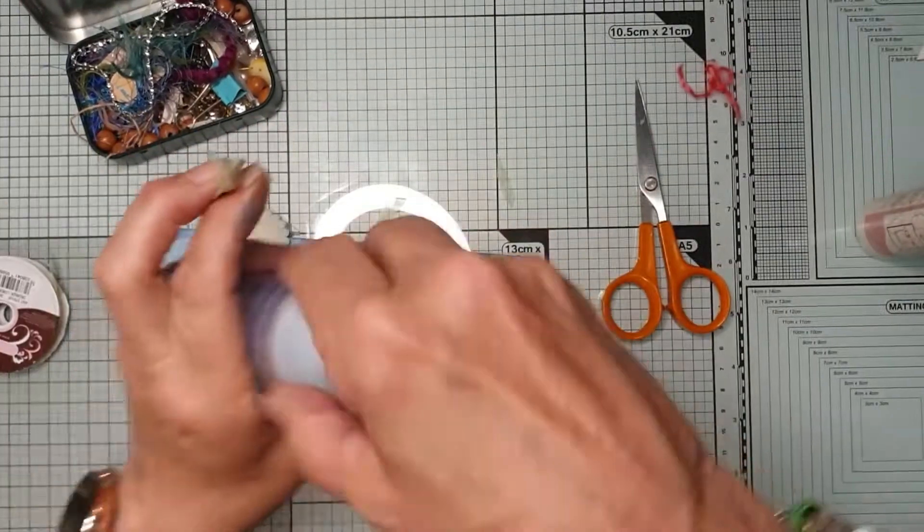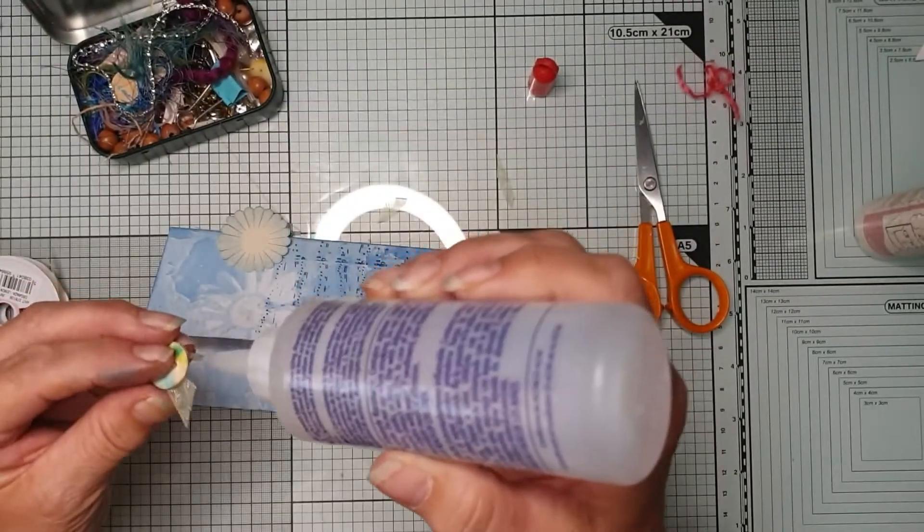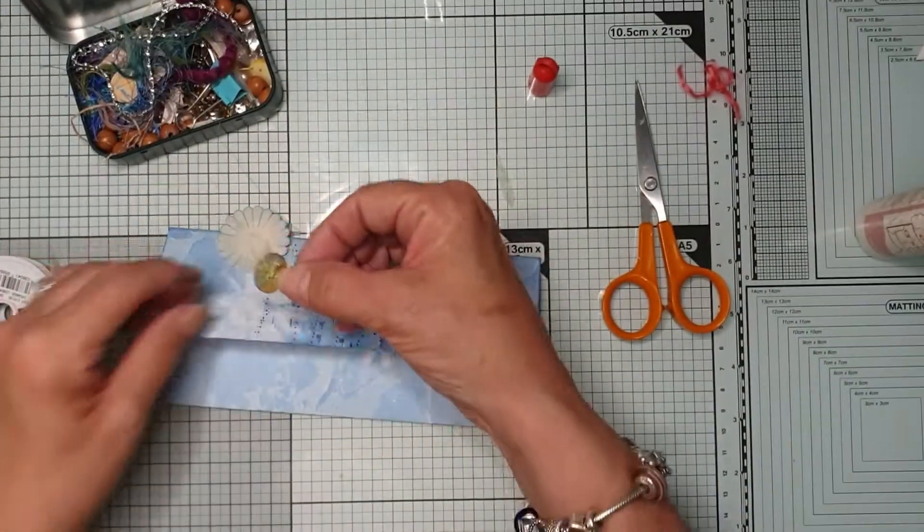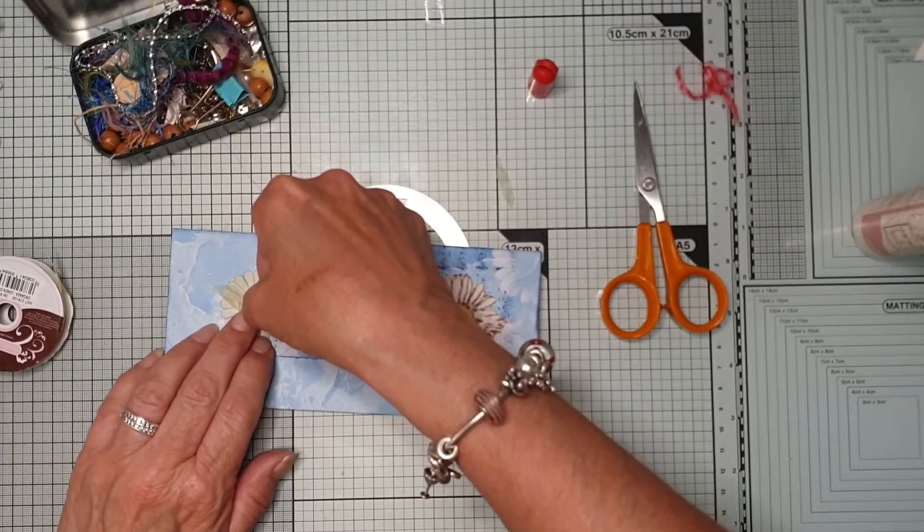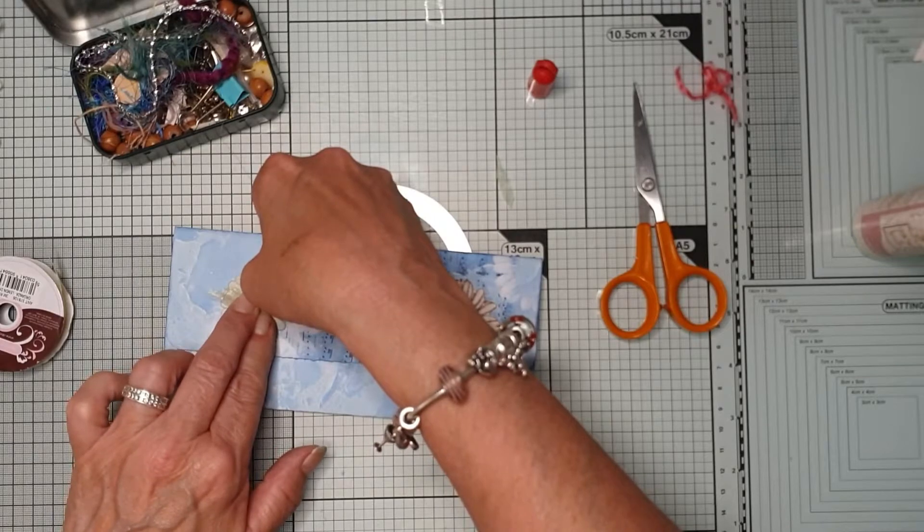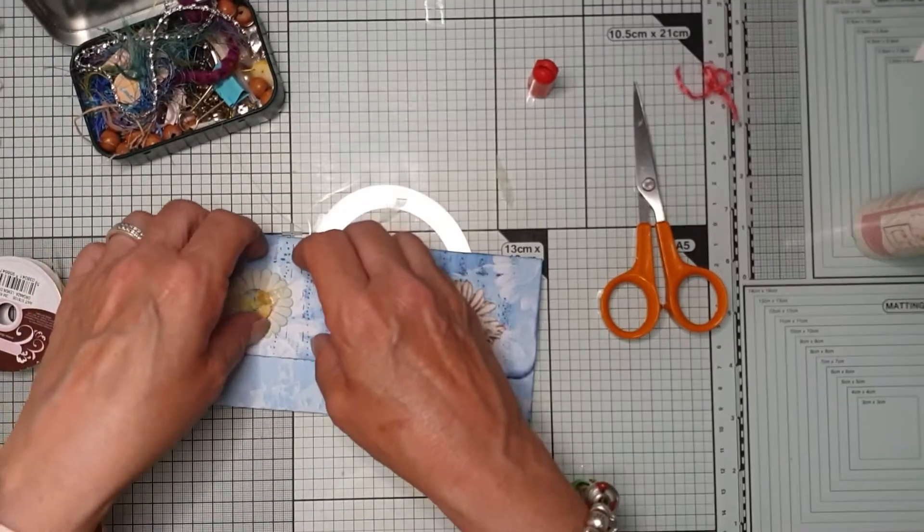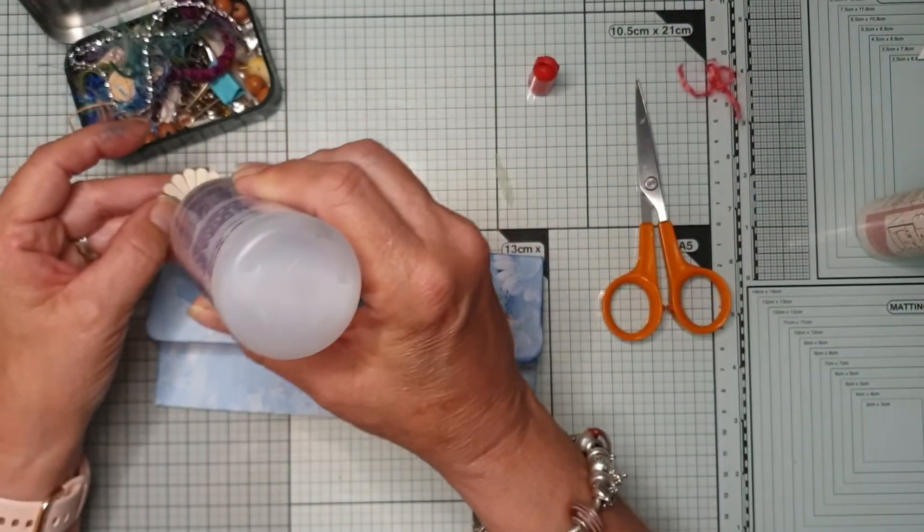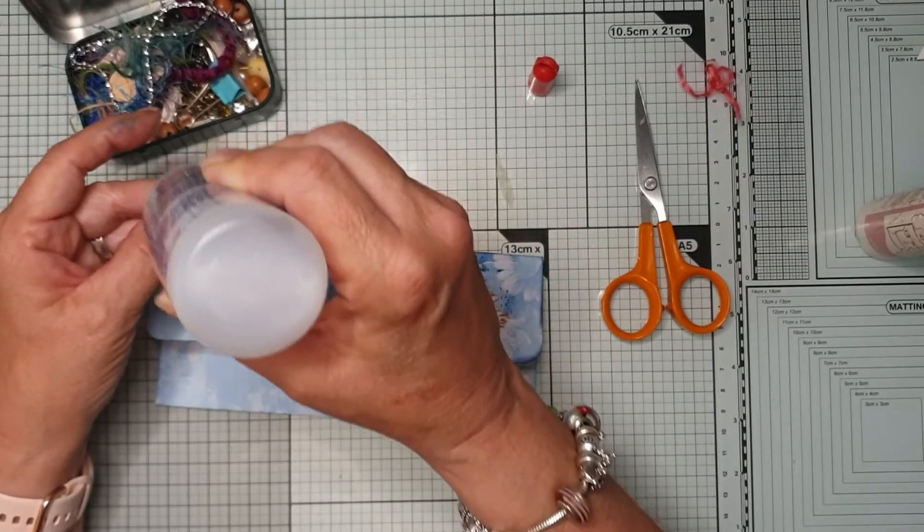I'll use Fabri-tac for putting the, these are just four buttons that I made out of, it was a challenge I was in while I was away. And it was a challenge with punches. And I only had circle punches. So I decided to make some charms and four buttons for my journals.